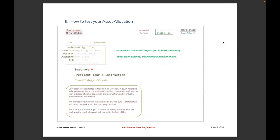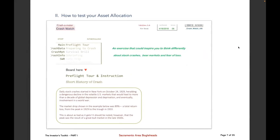Now we're going to move on to how to test your asset allocation. I used to call this the 'Crash Meter' when I first wrote this post about 10 years ago, but when I presented it to our local Bogleheads chapter group, we ended up changing that name because nobody knew what crash meter meant, so we called it 'Crash Watch.' It's an Excel spreadsheet with a friendly interface. The last time it was updated was 2018, but it's still very much valid.